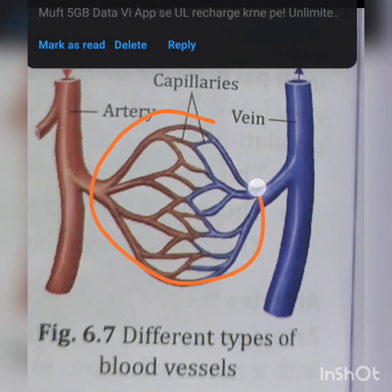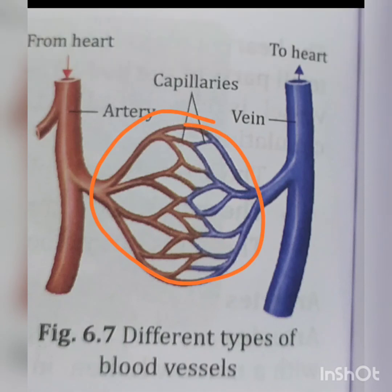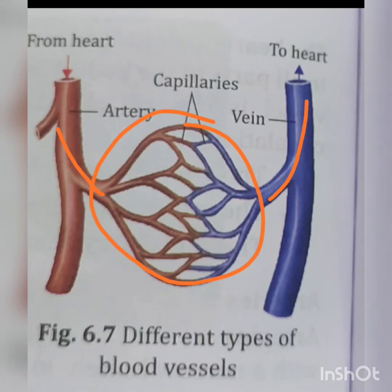Capillaries are the fine blood vessels connecting the arteries with the veins. The wall of the capillary is very thin — as you can see in the figure, it is only one cell thick — through which oxygen, nutrients and carbon dioxide dissolved in the blood are diffused out into the cells of the body.